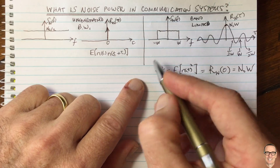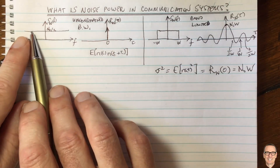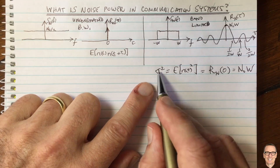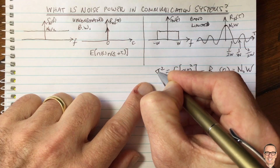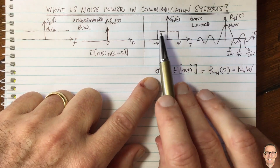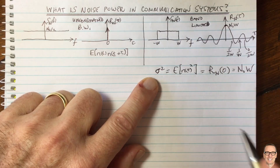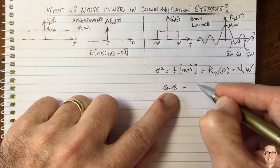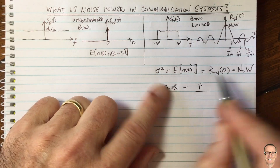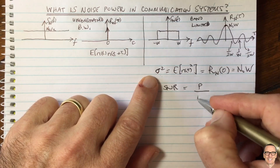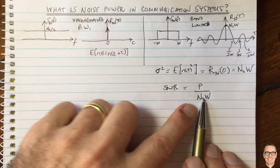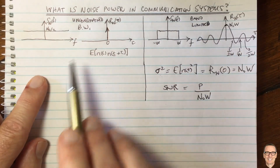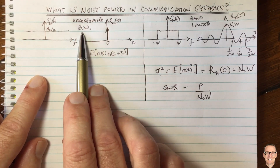The noise is Gaussian, so this spectral density describes noise that is Gaussian in its probability distribution. The variance σ² is the variance of the Gaussian noise at the output of the filter that filtered the noise — always important to remember. The signal-to-noise ratio in this case is the power of the signal divided by the power of the noise, which is N₀ times W. That is the SNR definition in the band-limited case.